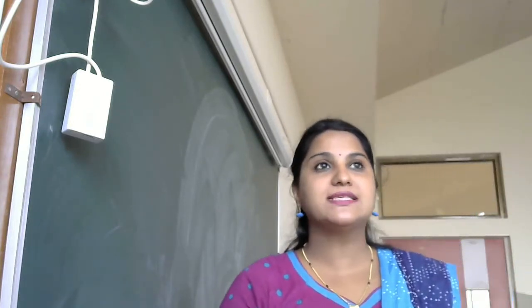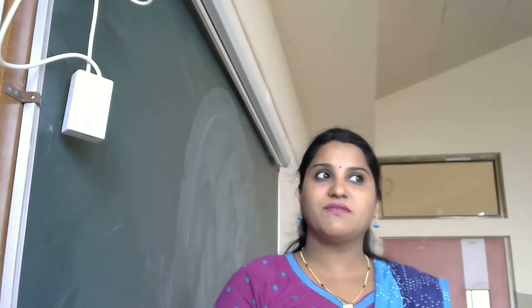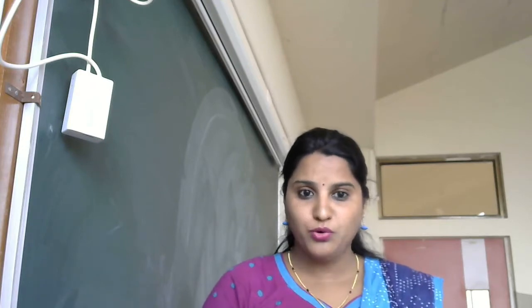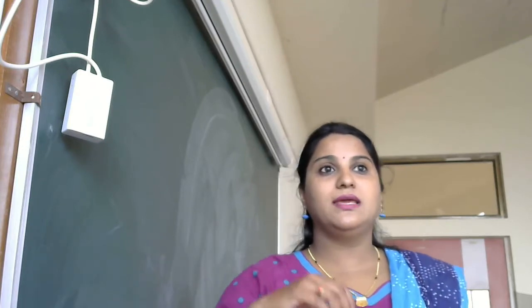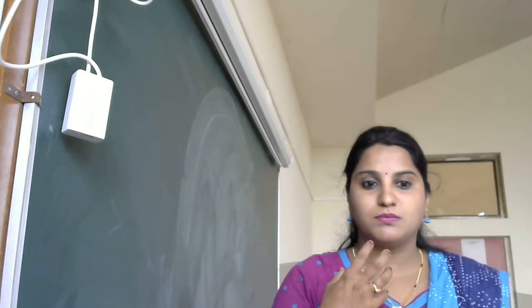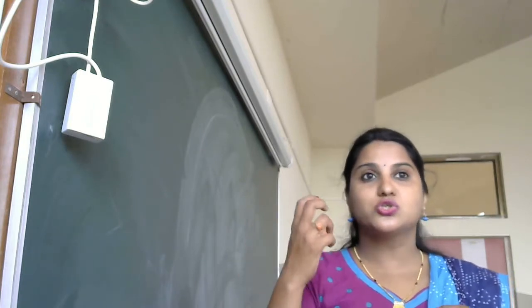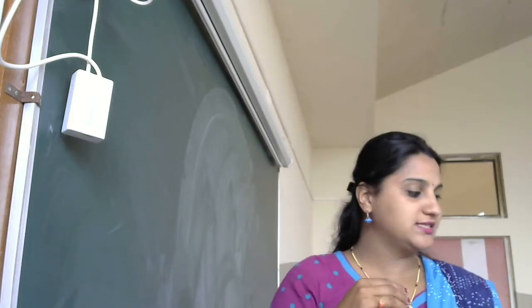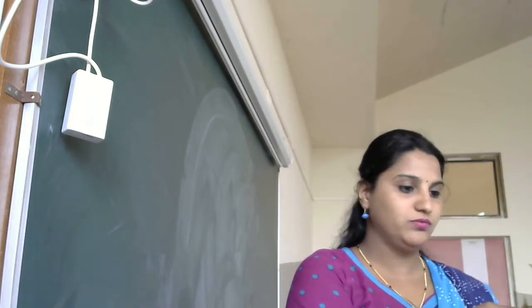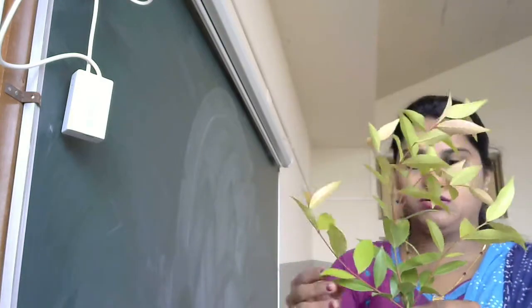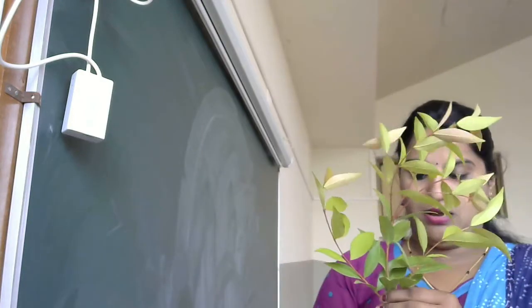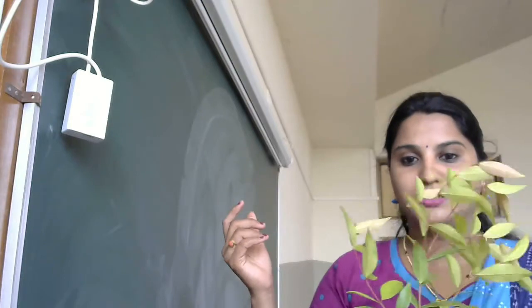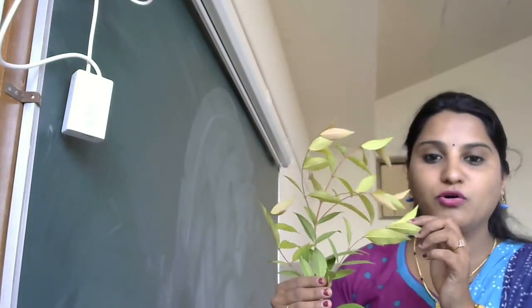We will see that plants grow from the stem. As I told you, you must have learnt in previous classes that the kitchen of the plant is the leaf. When the plant prepares its food in its leaves — I'll show you, this is a small branch I took from our school garden — these are the leaves, and these leaves prepare food for the plant.